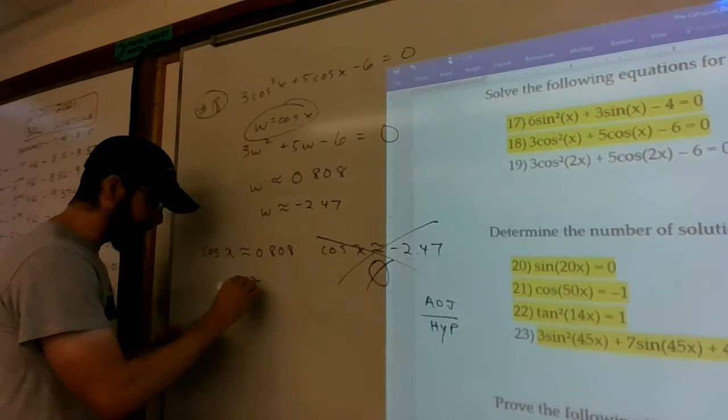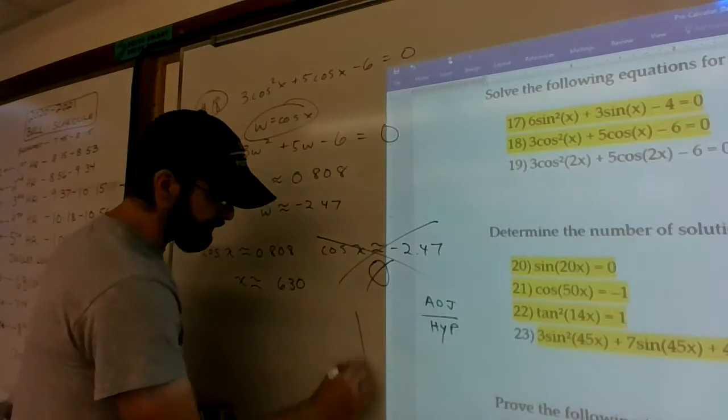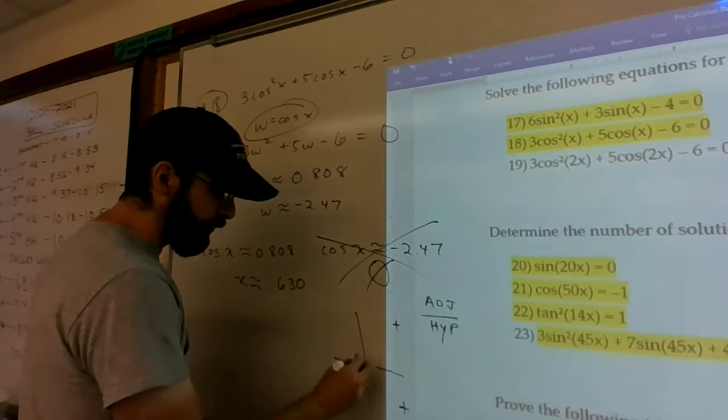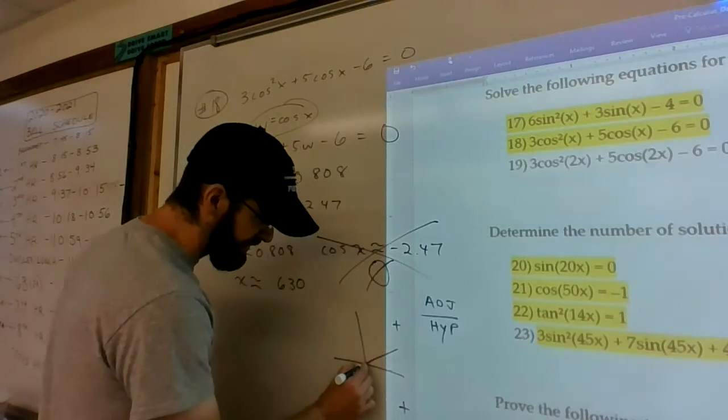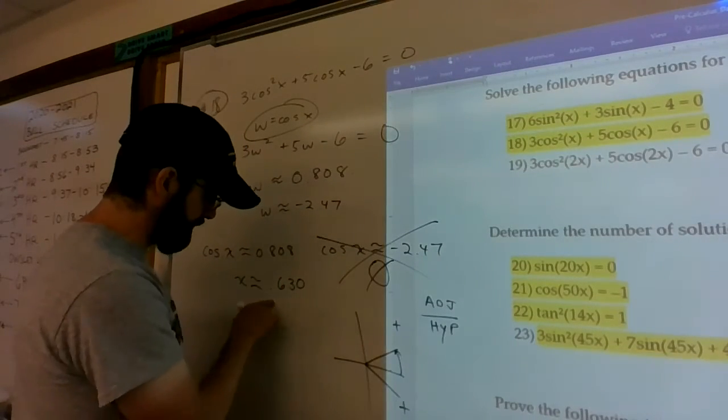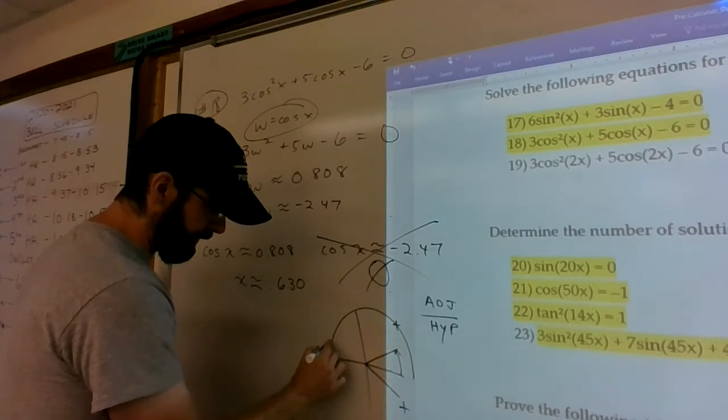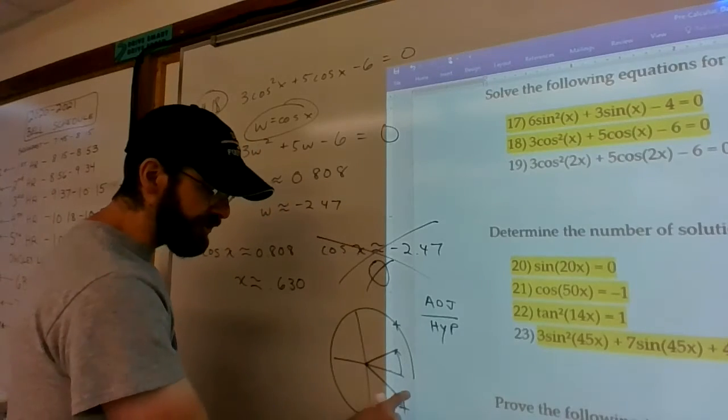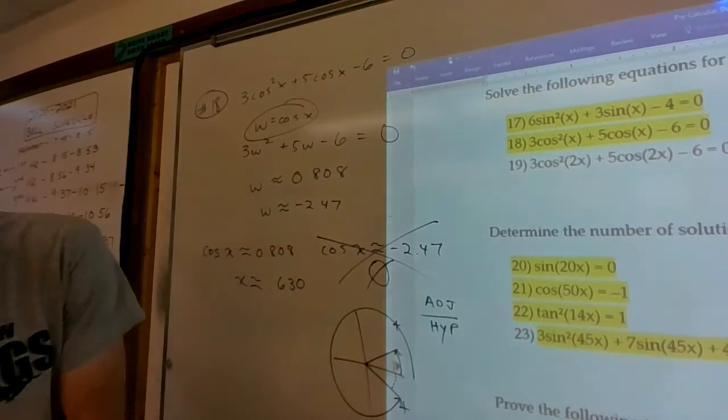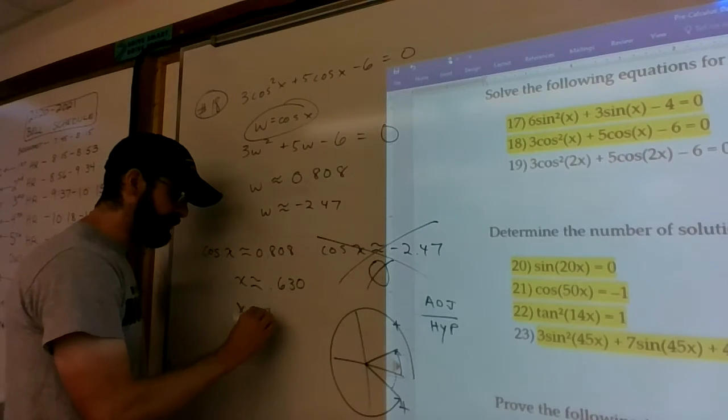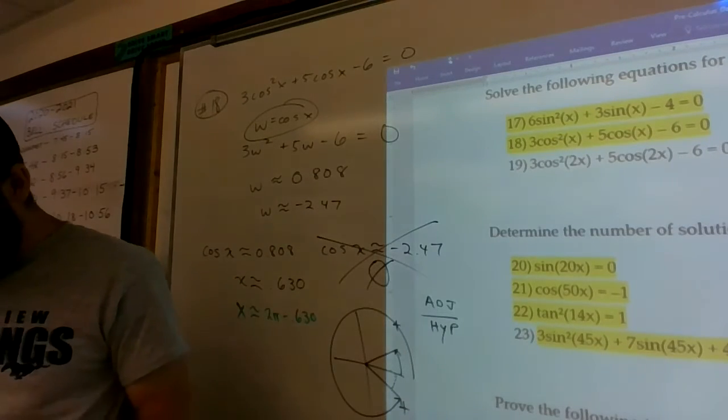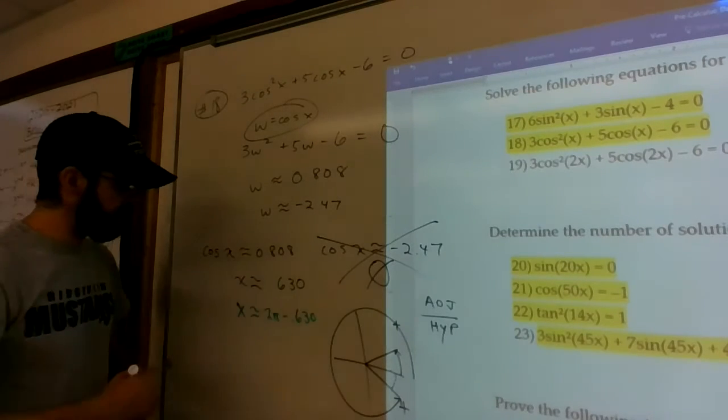If I do inverse cosine here I get x is approximately 0.630. The perspective we're looking at is that cosine is positive here and here. 0.630 radians is about there but there is also a 0.630 radian measure here. So we found this, it's that measure. Here's our second one. It's almost 2 pi units we're just taking away the 0.630. So your second solution is 2 pi minus 0.630 which is approximately 5.653.